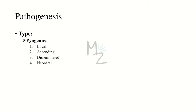The type of pathogenesis is pyogenic and has the following forms. It can be local — limited to a specific site like the genitals. If it starts to ascend, it will cause infections like PID, pelvic inflammatory disease. It can disseminate to different parts of the body — for example, if it reaches the nasopharynx, it will cause pharyngitis. It can also cause infections in neonates like neonatal conjunctivitis, in which case the pathogenesis type is neonatal.